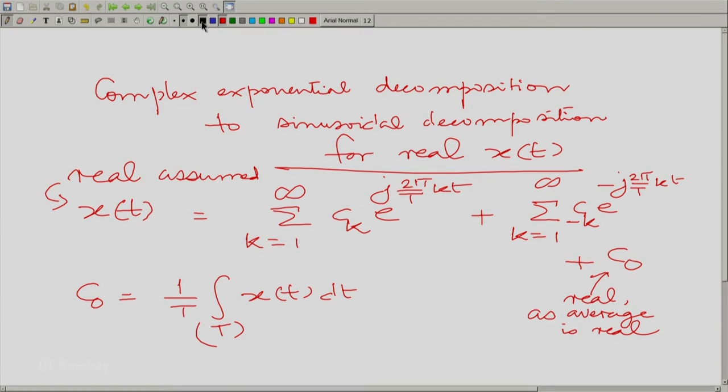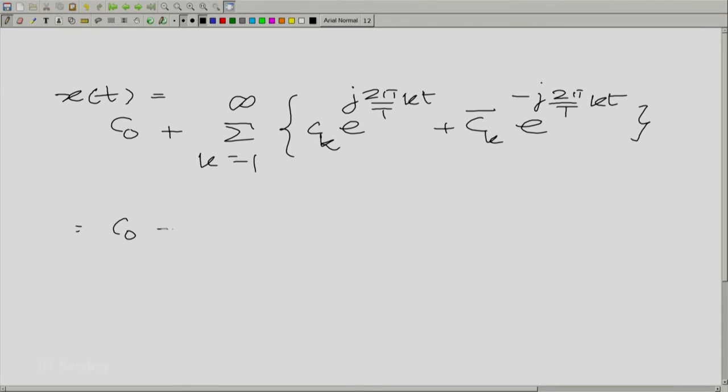We know what to expect for c_k and c minus k. You know that these are complex conjugates and therefore, let us take them together. x(t) is c_0 plus summation k going from 1 to infinity, c_k e raise to the power j 2 pi by T k t plus c_k complex conjugate and the complex conjugate of that rotating phasor too. You will notice that this is essentially the complex conjugate of the whole term. We have a sum of 2 complex conjugates. When you have a sum of 2 complex conjugates, it gives you essentially 2 times the real part of any one of them.